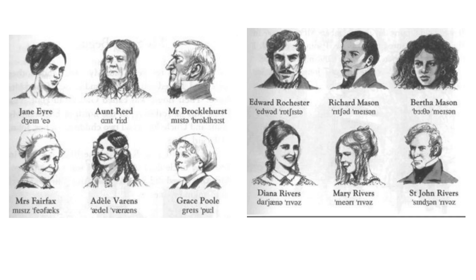10. Diana Rivers, one of Jane's cousins and St. John's sisters. She is similar to Jane in intellect and personality, and shows Jane heartfelt compassion. 11. Mary Rivers, Diana's sister and another of Jane's cousins. She is kind and loyal, and cares for Jane throughout her illness.